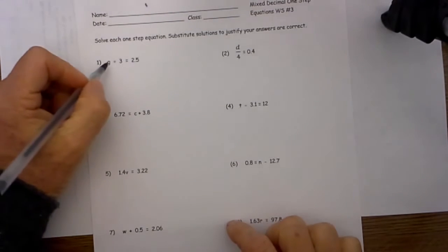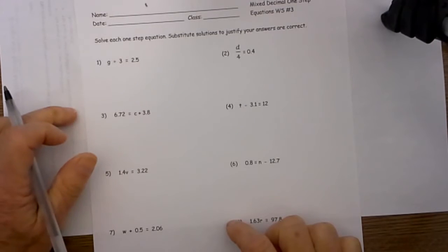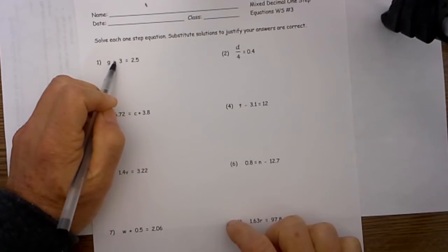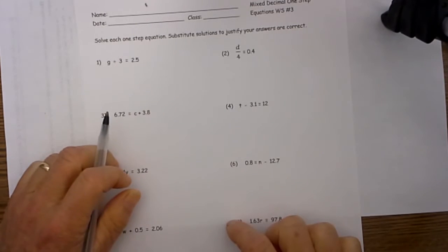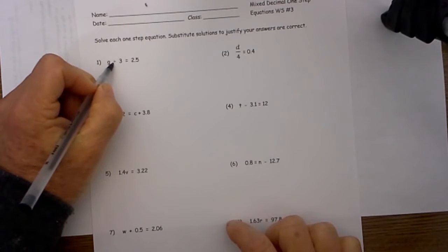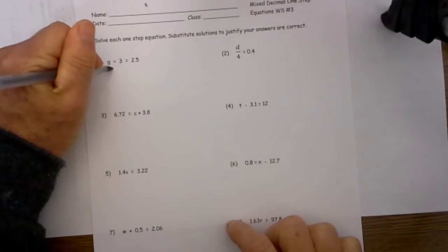Let's begin with this one. G divided by 3 equals 2.5. You know in a one-step equation, what you do to one side of the equation you must complete with the other. Well, to get the variable by itself and we have division, we are going to use multiplication.